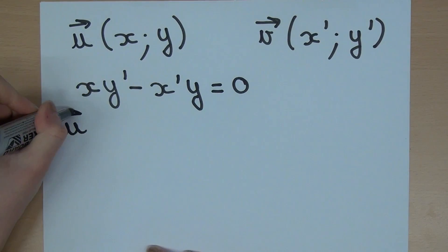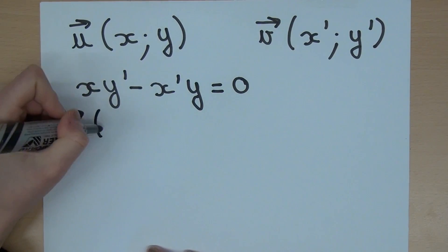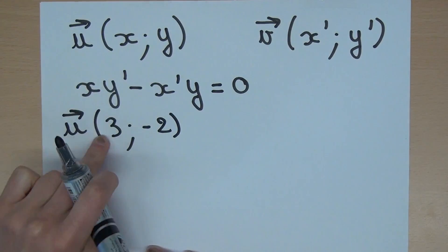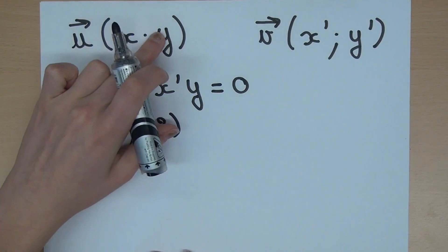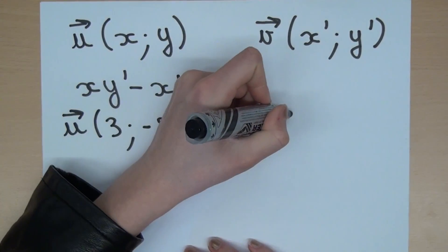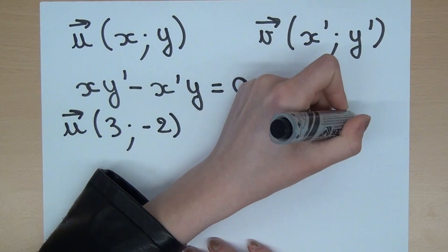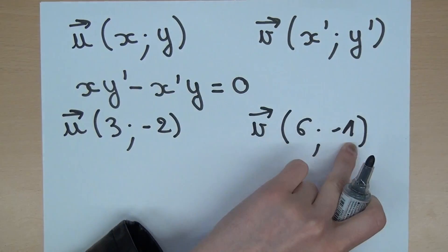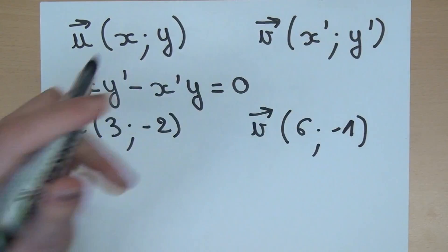For instance, u(3, -2). 3 is x and -2 is y. And v(6, -1). 6 is x' and -1 is y'.